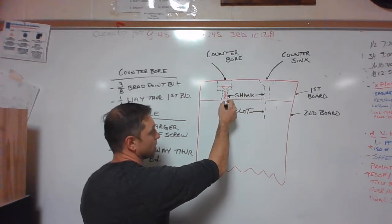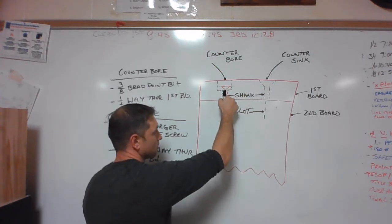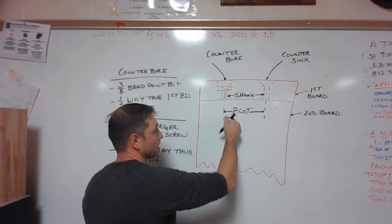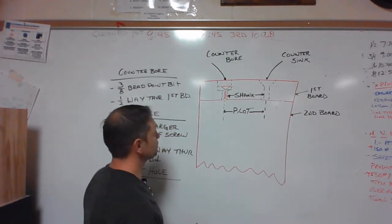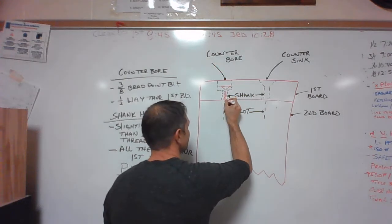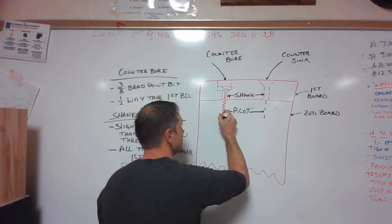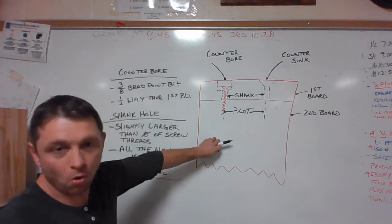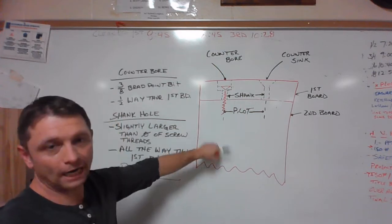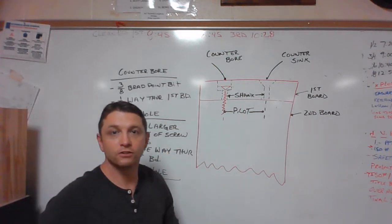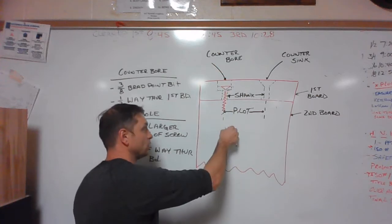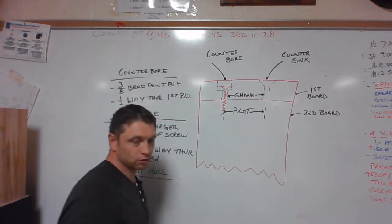Also what it does is it removes material from the second board, because at this point our screw is starting to bite into or actually screw into the material, and depending on the density of this board it could cause this to crack. So we want to remove some material there so that it will be able to screw into that board and not crack or split.